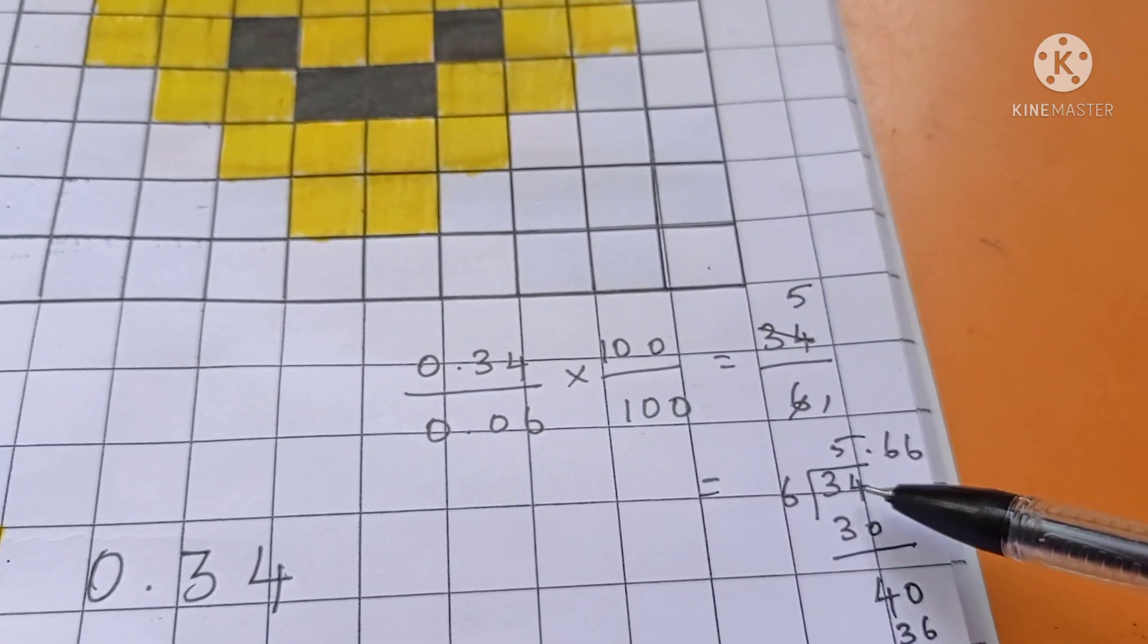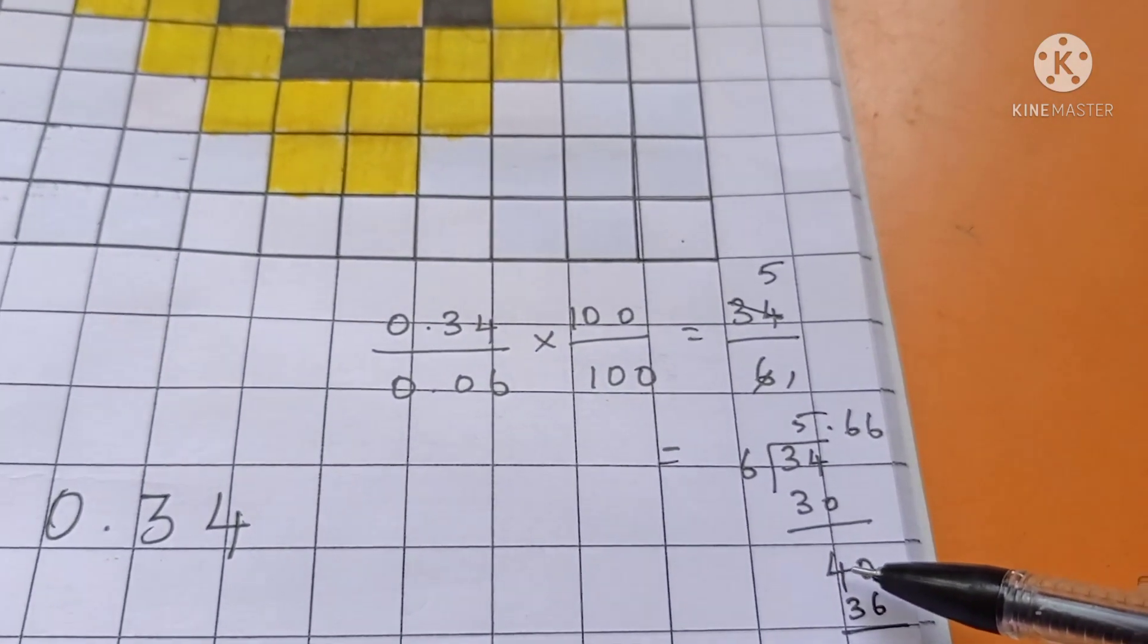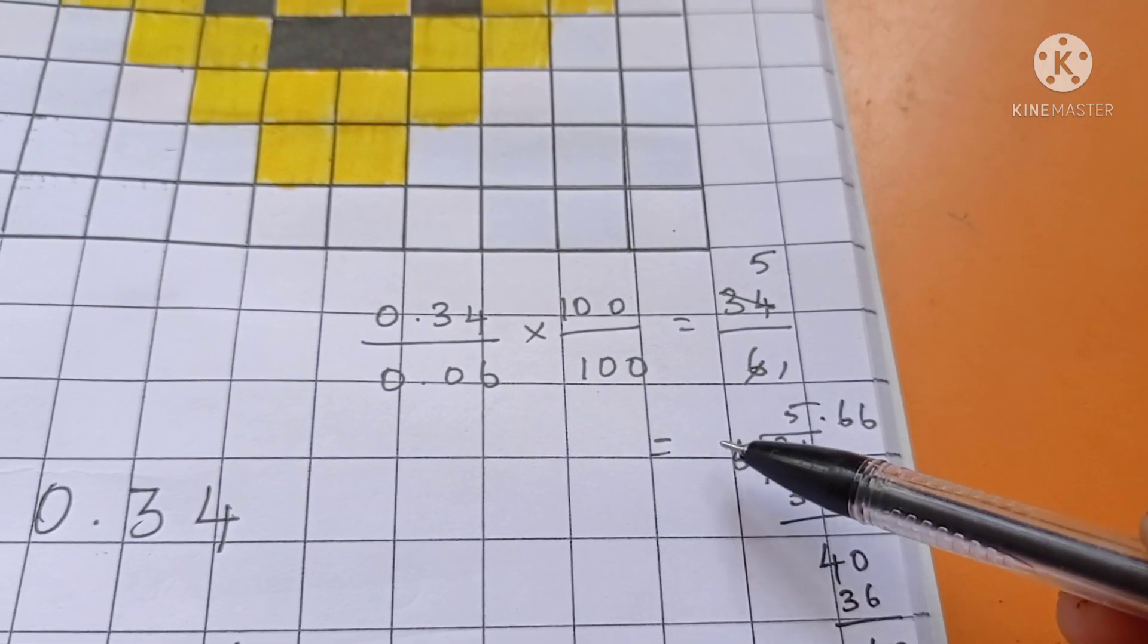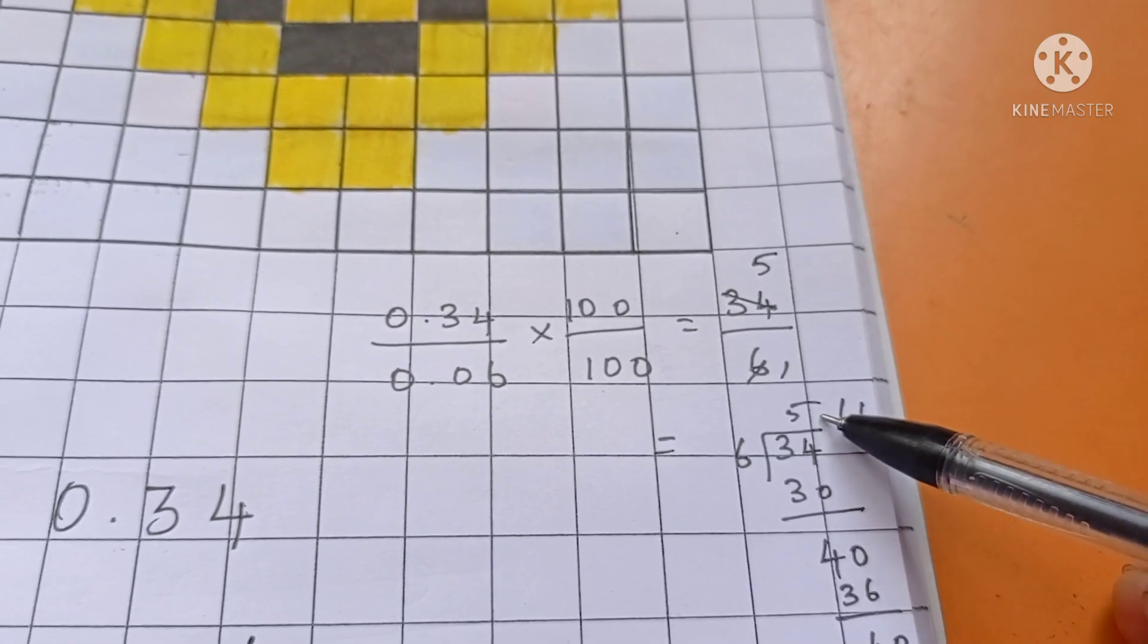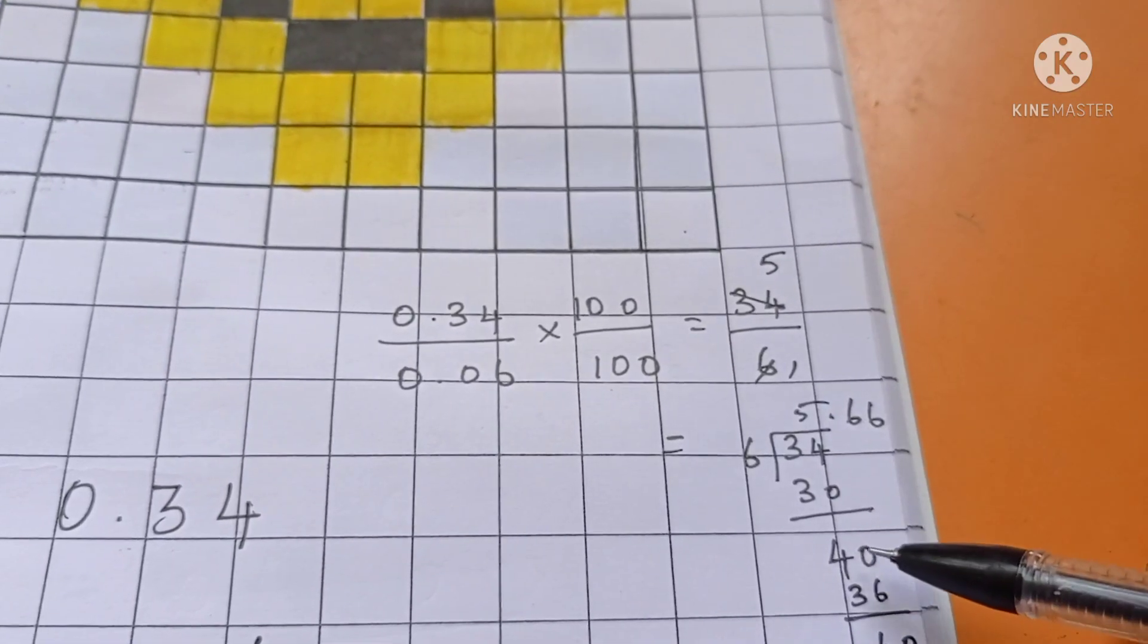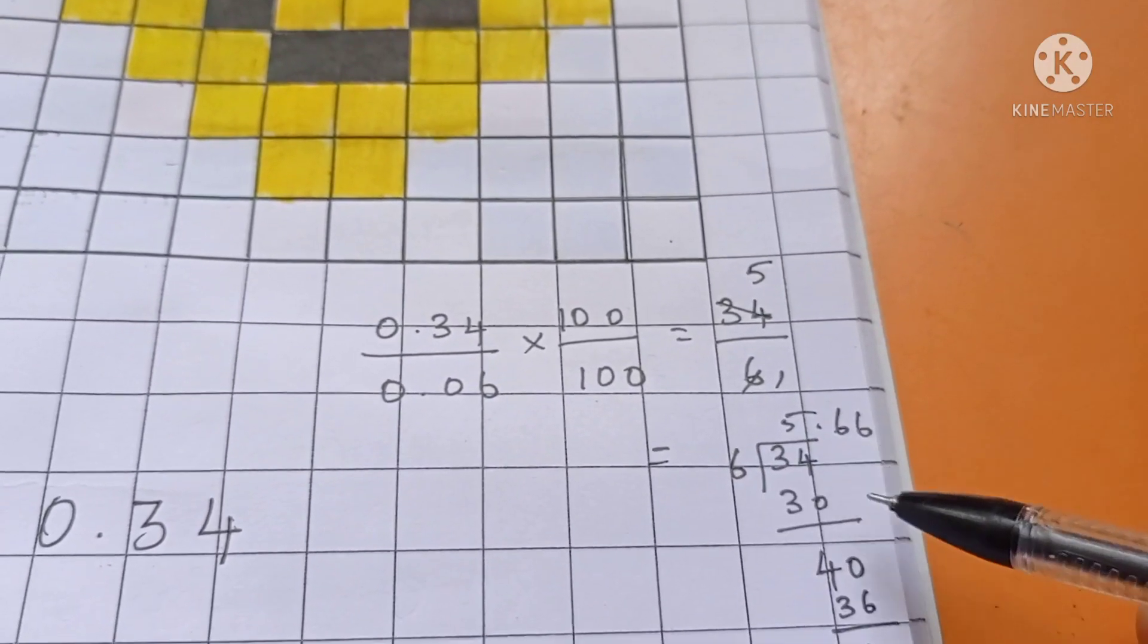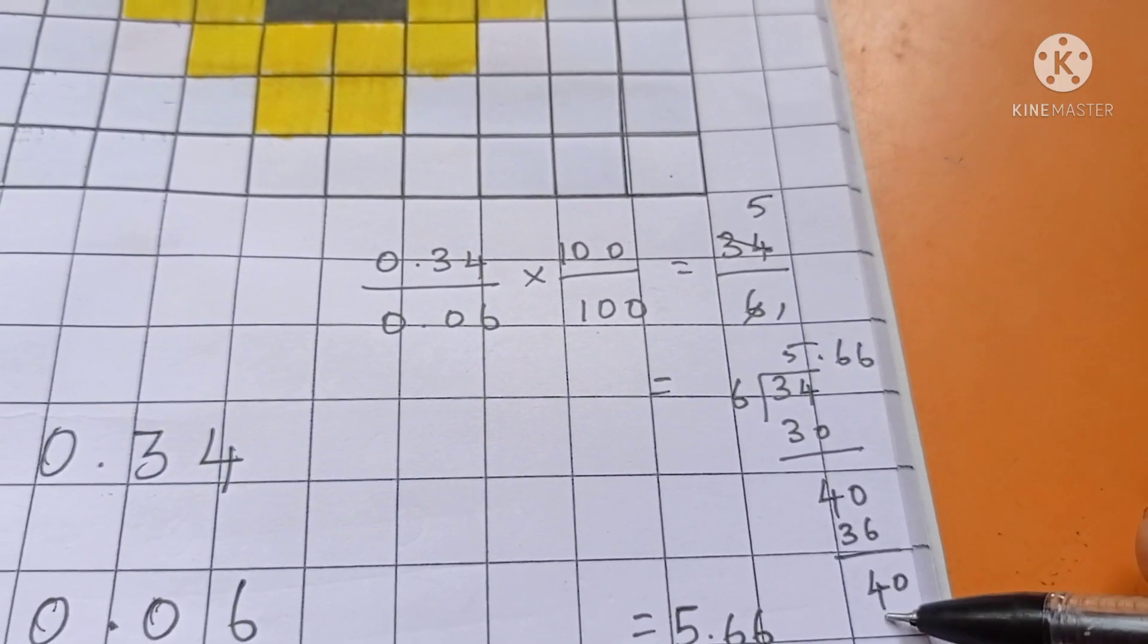6, 5s are 34. Remainder. So 4 we can't divide by 6. So we have to add decimal point here. Then add 0 here. 6, 6 are 36. Again 4 remainder.